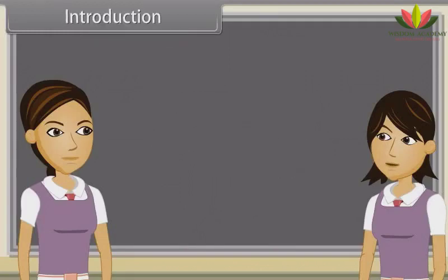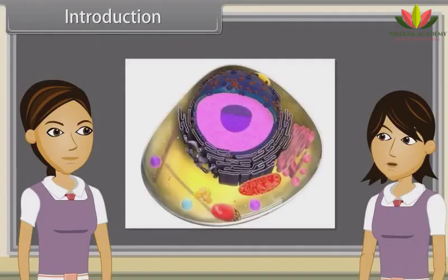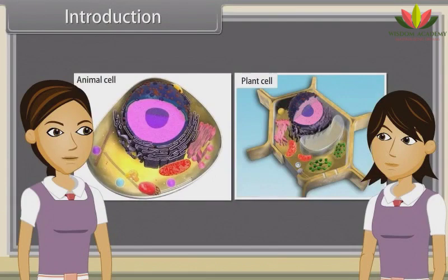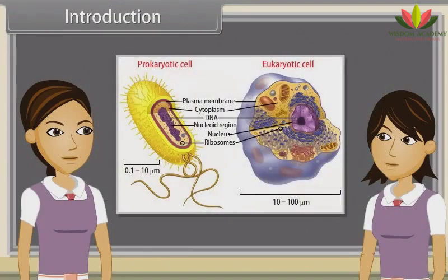Ankita, we have discussed cell theory, structure and functional regions of cell already. Yes, and now we'll discuss that there are two types of cells, plant cells and animal cells. We'll also observe the structure of plant and animal cells and discuss the difference between plant and animal cells, as well as prokaryotic and eukaryotic cells.